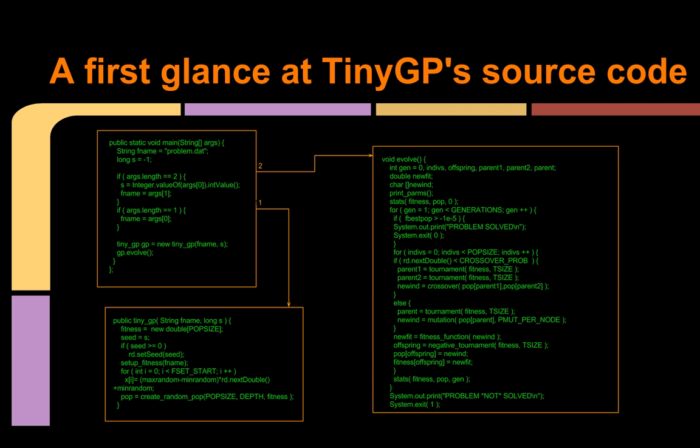Let's transition now to talking about TinyGP's source code. Everything gets started once the main method is executed. It creates a TinyGP object called GP, which invokes the TinyGP's constructor method. Then, GP calls the Evolve method.